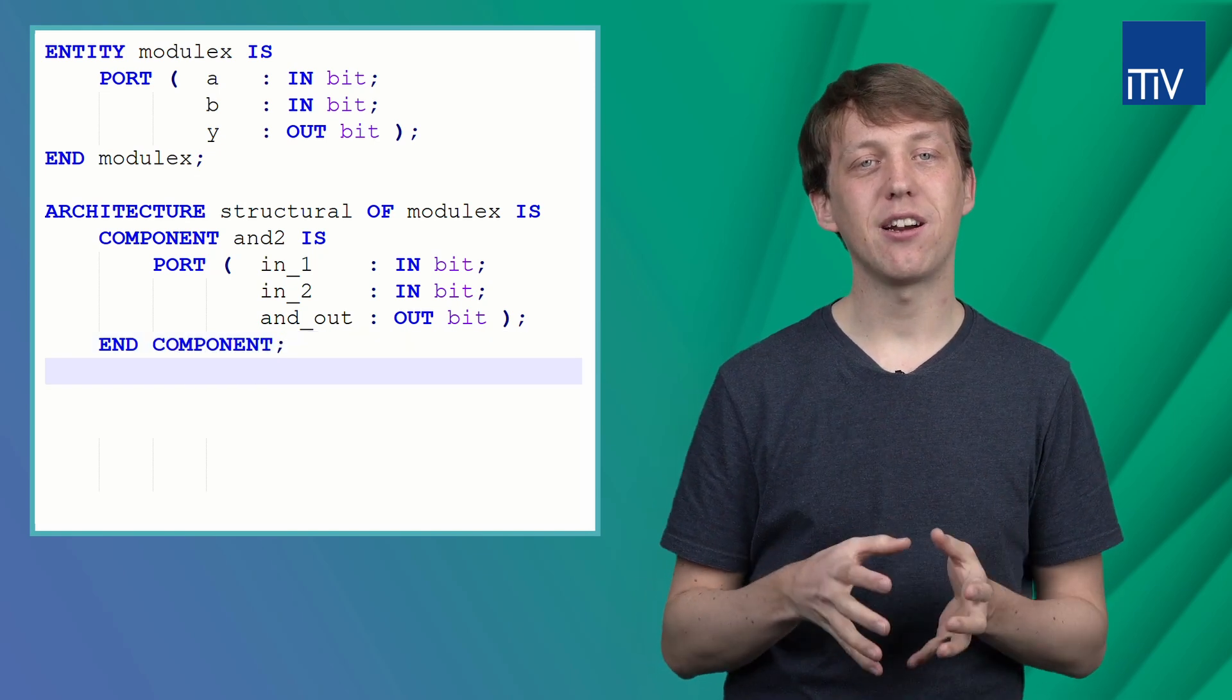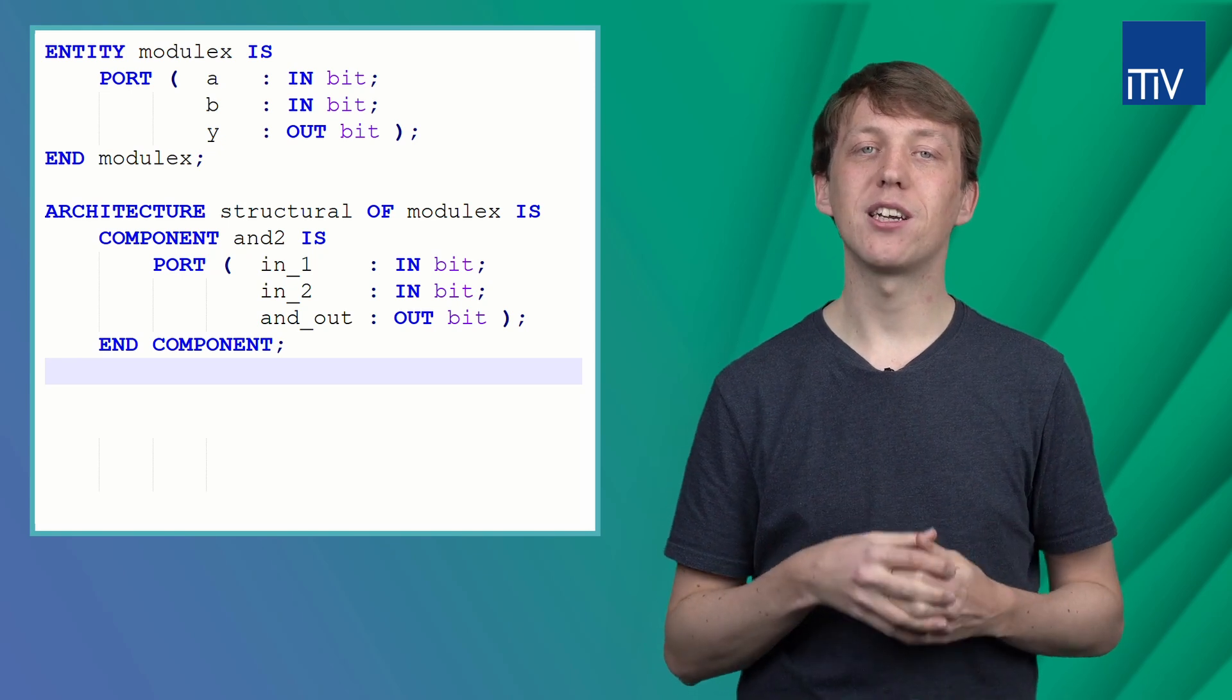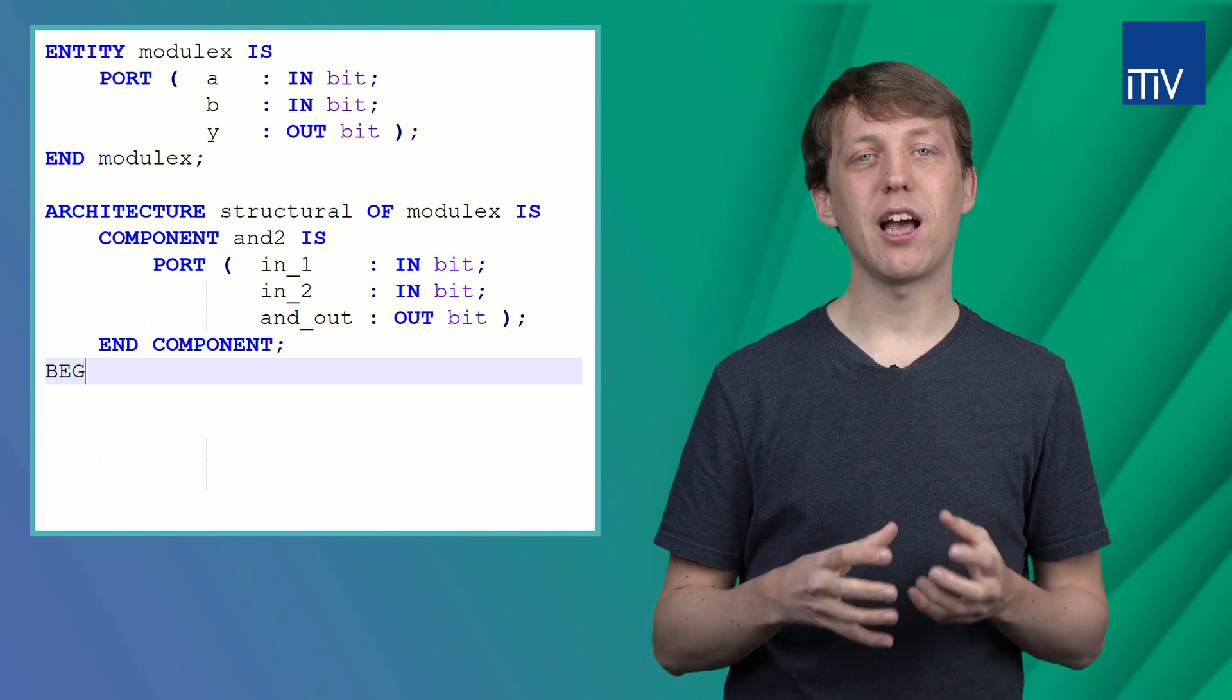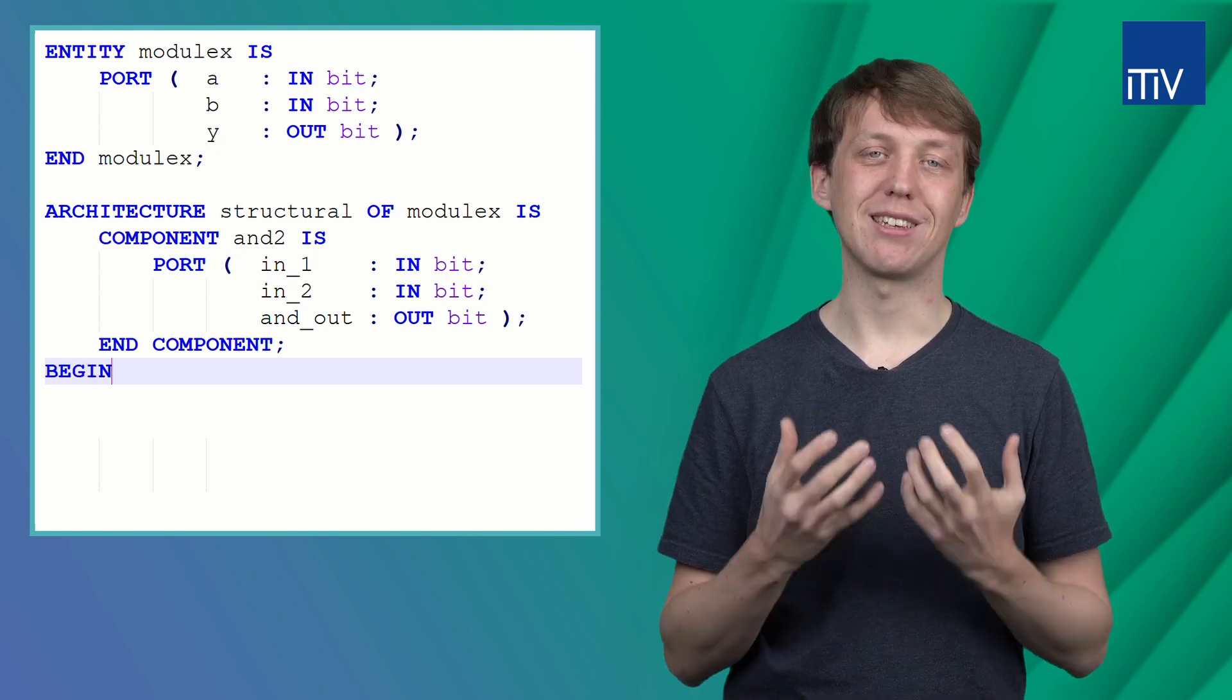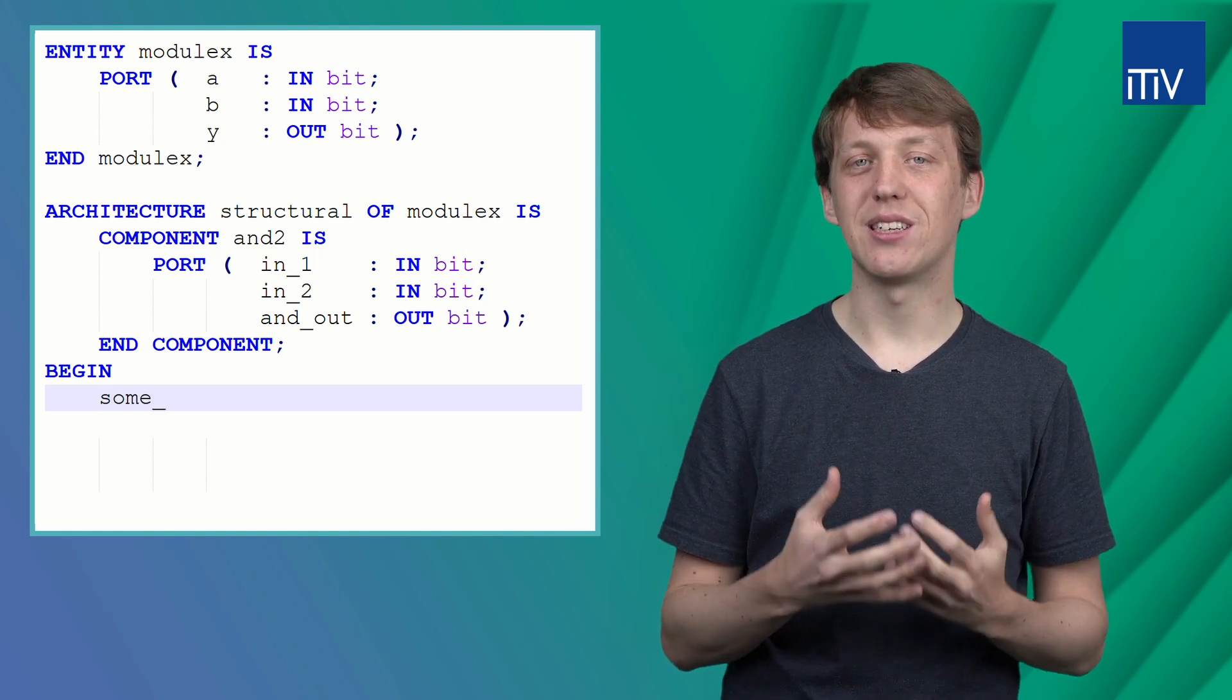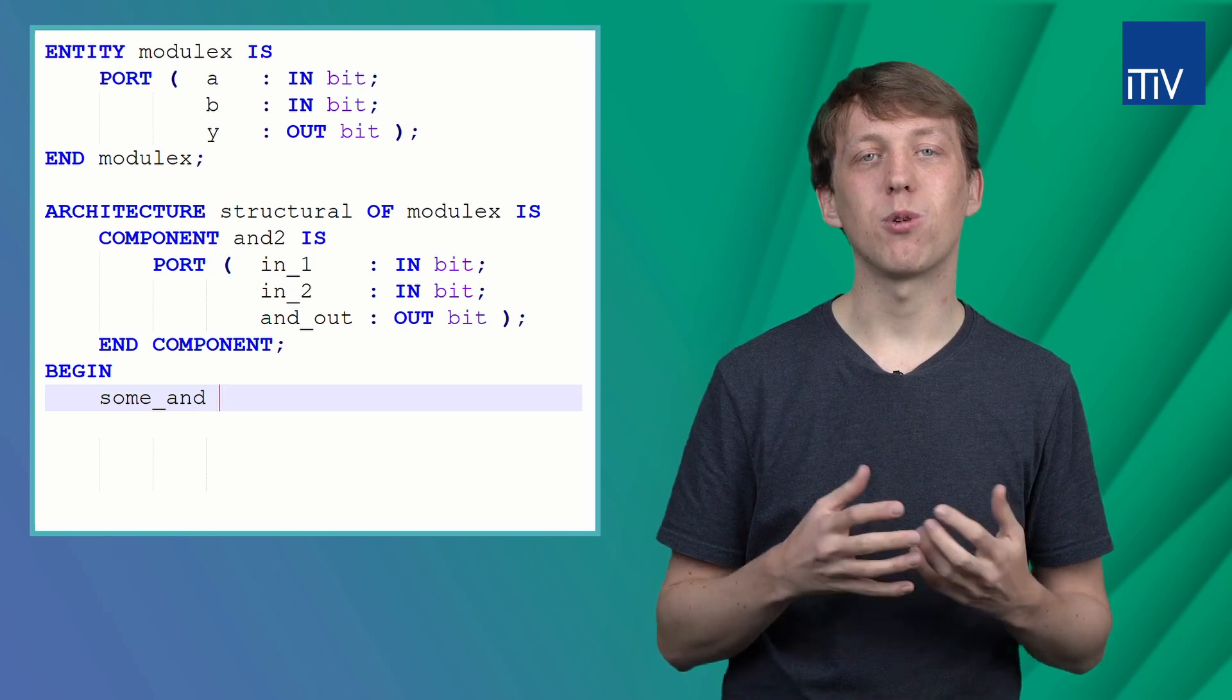Now that we have declared our component, we can think about the body of our architecture using the AND gate. Right after the BEGIN keyword, we want to instantiate the gate. Therefore, we give the component an arbitrary name and after the colon, we tell which component we want to instantiate. In this case, it's the and_2.